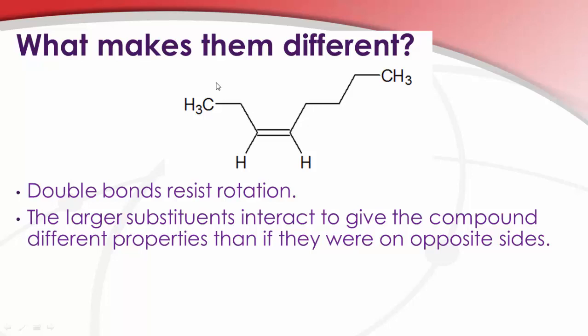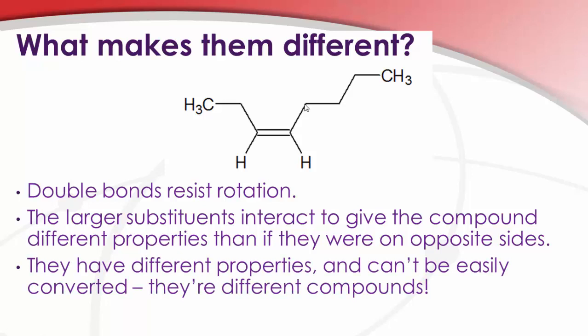And what this means is in this case, when both the hydrogens are pointed down, the larger substituents are pushed against each other. They're interacting with each other on the same side of the molecule. And this gives it different properties than its geometric isomer. So when they have different properties and they can't be easily converted, they're different compounds.